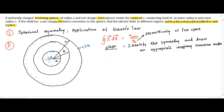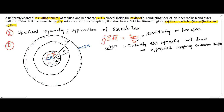Hence, the Gaussian surface is a sphere in this case. I am going to draw a Gaussian surface in the region where I want to find the electric field. For finding the electric field at point 1, distant r1 from the center, I draw a sphere of radius r1 at that point, using dotted lines for that.